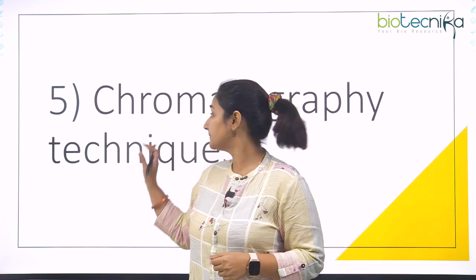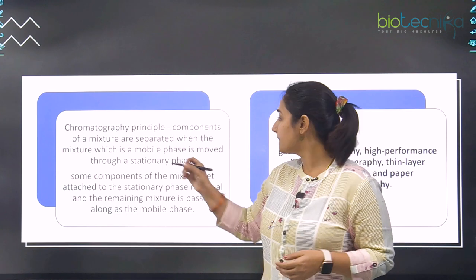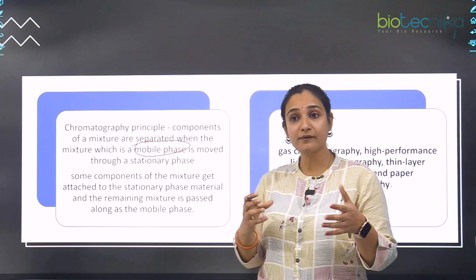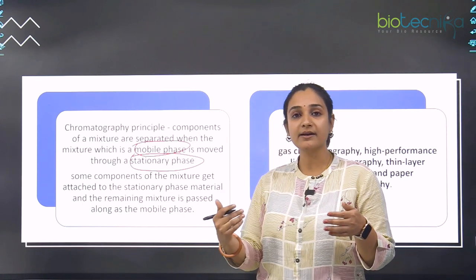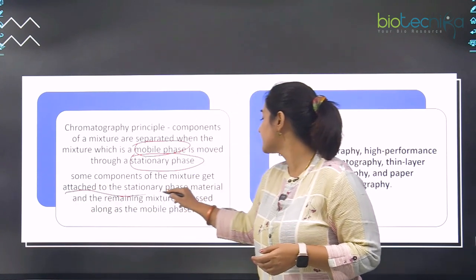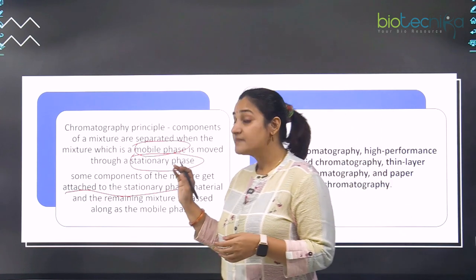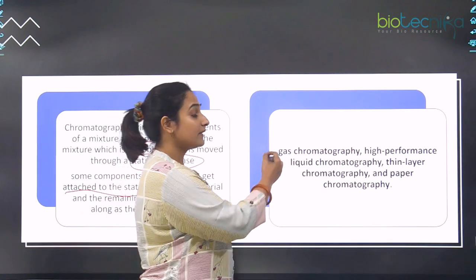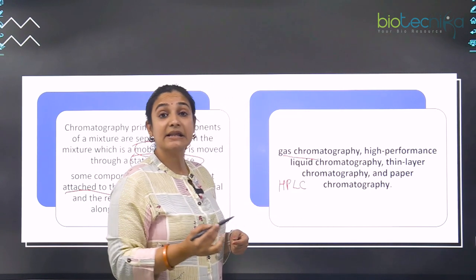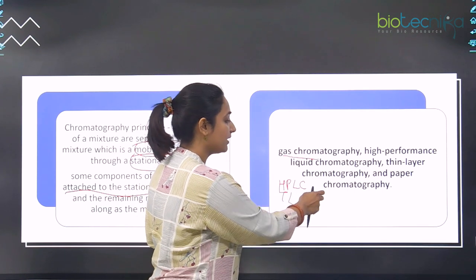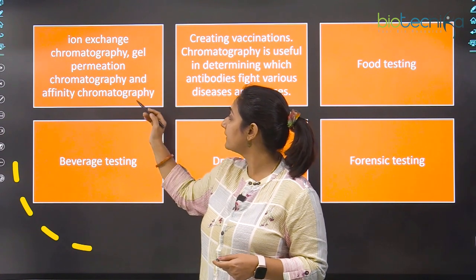The fifth technique is chromatography. The principle is that components are separated when the mixture is in a mobile phase — moving through a stationary phase. Some components get attached to the stationary phase while the rest of the mobile phase washes out. The major chromatography types are gas chromatography, high performance liquid chromatography (HPLC), thin layer chromatography (TLC), and paper chromatography. There are also other types like ion exchange chromatography, gel permeation chromatography, and affinity chromatography.